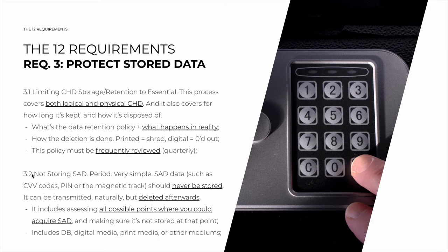3.2 is very simple: no storing sensitive authentication data, period. What's usually on the back of the card — such as the CVV code, or the magnetic track, or the PIN number — should never be stored. It's not needed. It can be transmitted naturally, but it is immediately deleted afterwards.